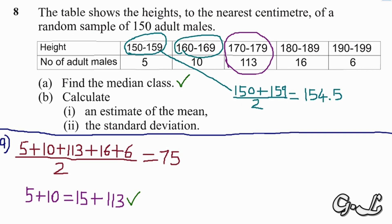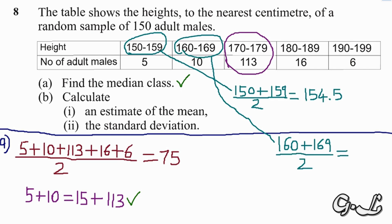Similarly, for 160–169 we add 160 plus 169 and divide by 2. For 170–179 we add 170 plus 179 and divide by 2. For 180–189 we add 180 plus 189 and divide by 2. For 190–199 we add 190 plus 199 and divide by 2.